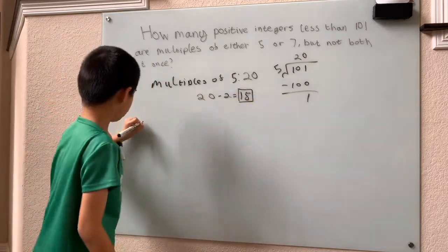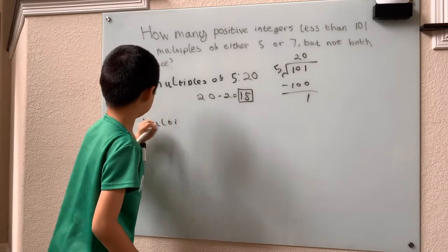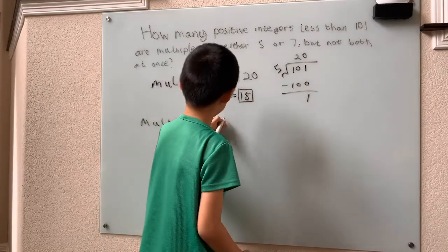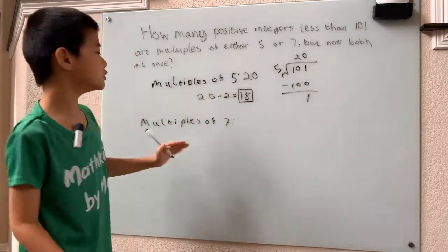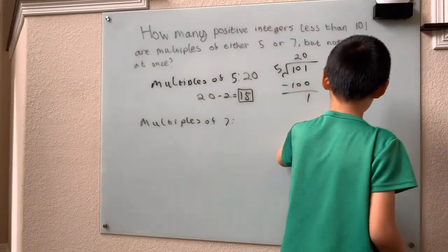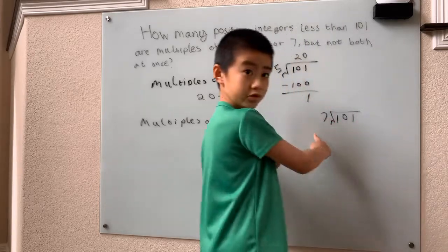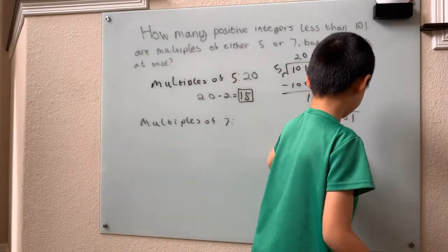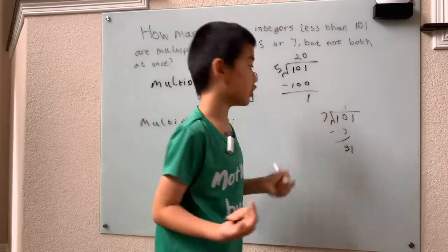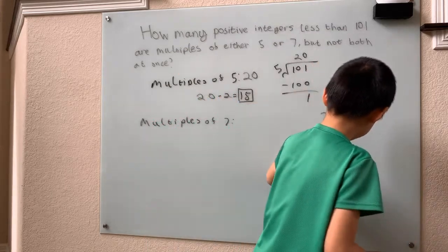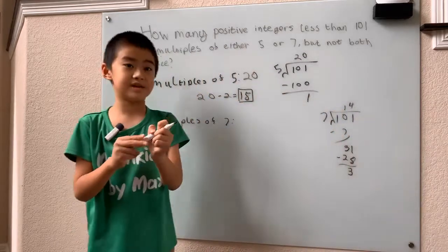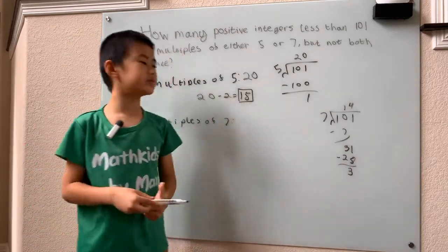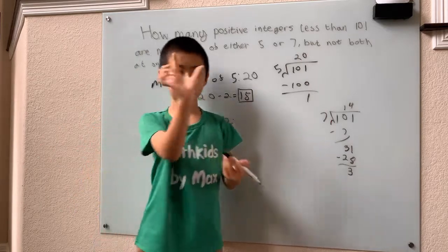And now the multiples of 7. Now, we'll do this with long division too. We can just easily divide 101 by 7. 7 goes into 10 once. Subtract 7, have 3, drop down 1. And 7 goes into 31 four times, which will give us a remainder of 3. Now, what that means is we can basically fit in 14 of these little blocks of 7 in 101 before we run out of space for another block of 7, and then we just have to use a block of 3.